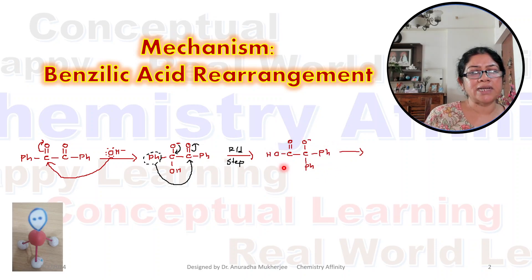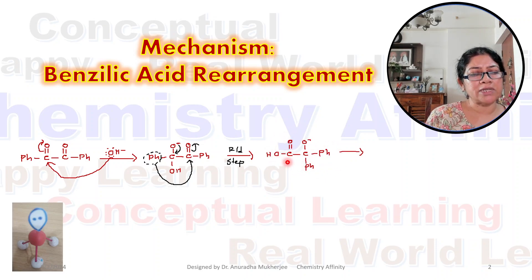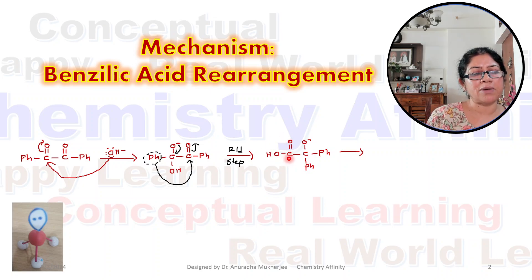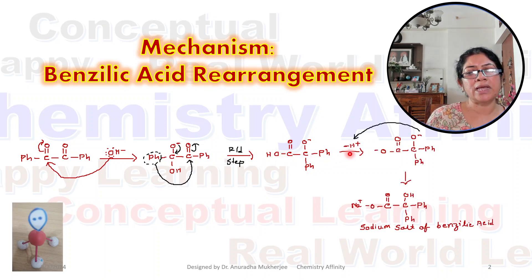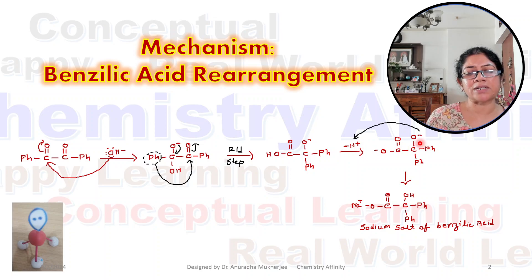So we are getting this compound. This is a carboxylic acid — on the left hand side it becomes carboxylic acid. The hydrogen is acidic in nature, so H⁺ is released and this H⁺ is abstracted by O⁻, and it forms the sodium salt of benzylic acid.